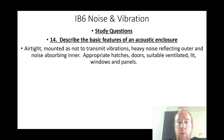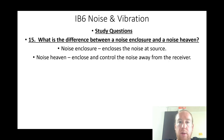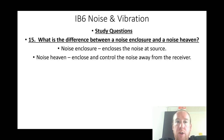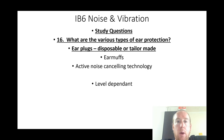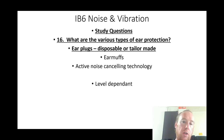What is the difference between a noise enclosure and a noise haven? A noise enclosure encloses the noise at source; a noise haven encloses and controls the noise away from the receiver. What are the various types of ear protection? Ear plugs, disposable and tailor-made ear muffs, active noise cancellation technology — all level-dependent.